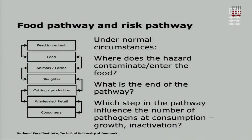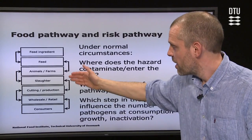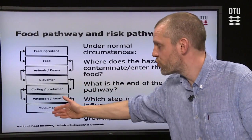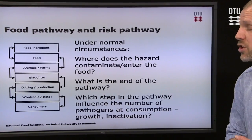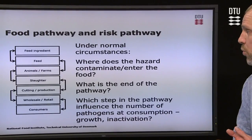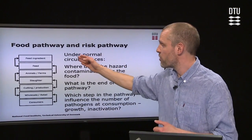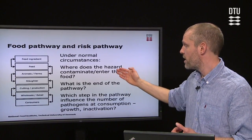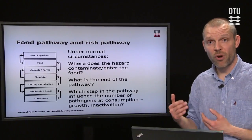This is a more schematic illustration of the food pathway, and I always use it myself in the beginning to make sure I get around all the possible points of pathogen entry. We start with the feeding ingredients, then we go to feed, animal, farm, slaughterhouse — we're talking about meat products — cutting and production plant, wholesale, retail, and also the consumer. What does the consumer do with the product in the home kitchen? We model the exposure under normal circumstances, so we are not taking into account people who break the law or do really stupid things at home. The key questions are: where does the hazard enter the food, what is the end of the pathway, and which steps in the pathway influence the number of pathogens at consumption — do we have growth or inactivation?